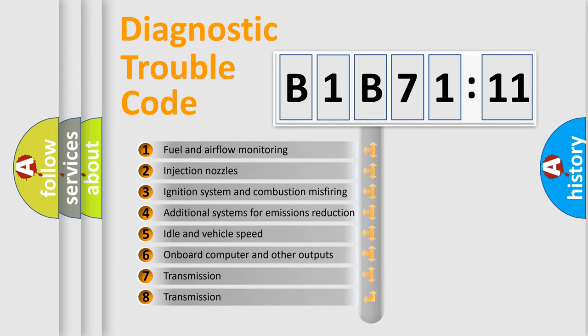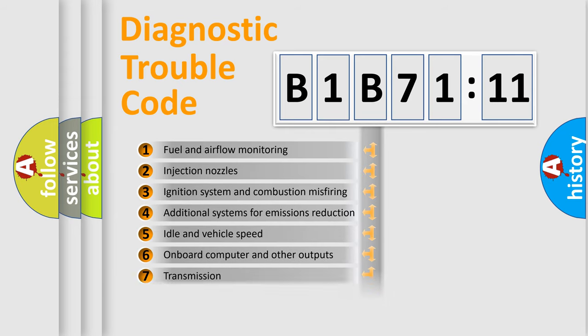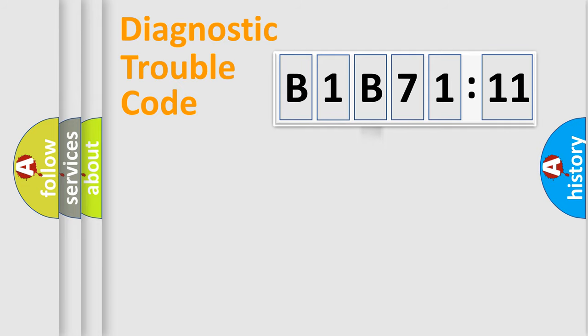The third character specifies a subset of errors. The distribution shown is valid only for the standardized DTC code. Only the last two characters define the specific fault of the group.